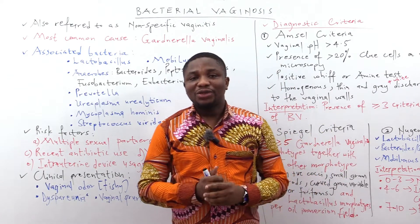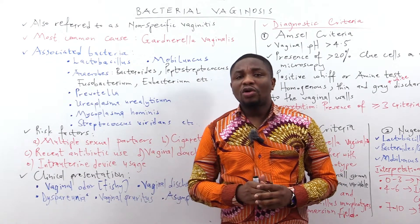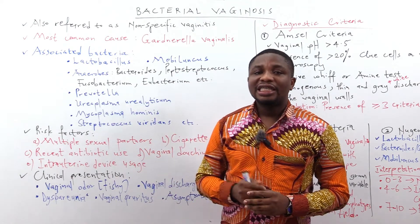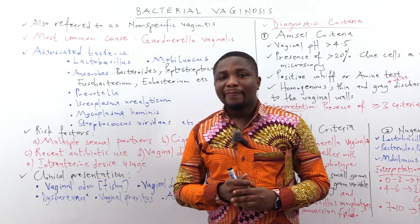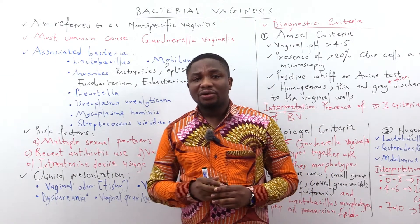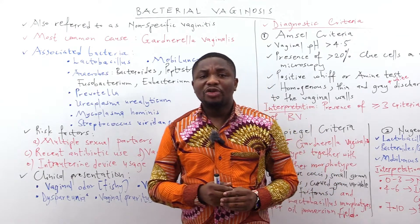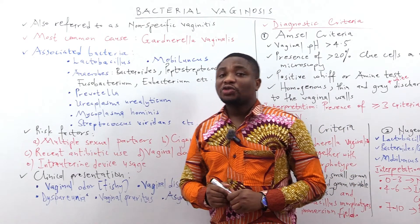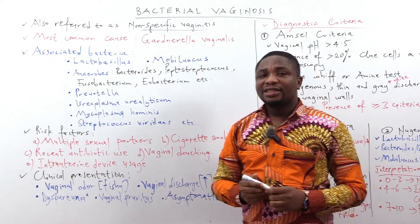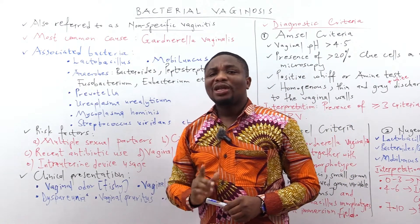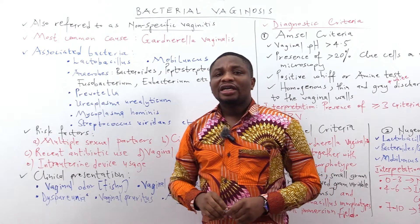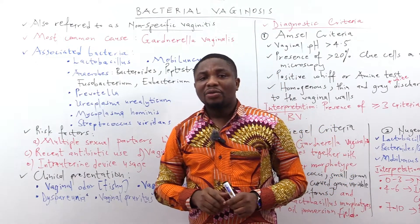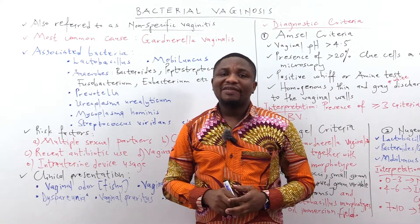Today we are going to be looking at bacterial vaginosis. Bacterial vaginosis is so-called because the word 'bacteria' connotes that this condition is caused by bacteria, and 'vaginosis' because there is no specific inflammatory response. Formerly, bacterial vaginosis was referred to as non-specific vaginitis, because no single microorganism was identified as the cause. With time, it was realized that bacteria were involved, and the name changed to bacterial vaginosis.